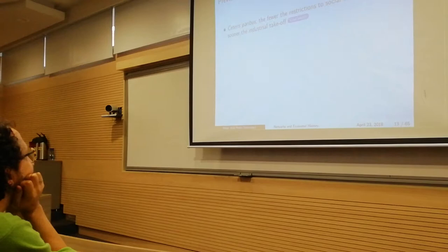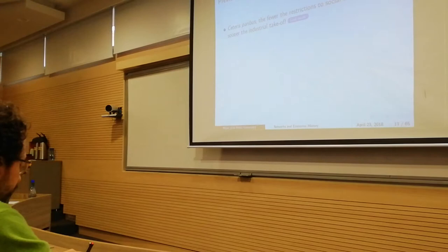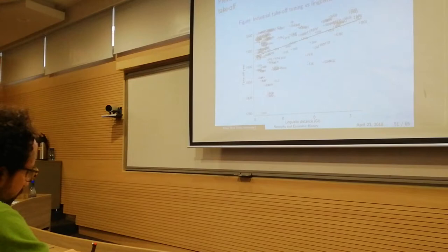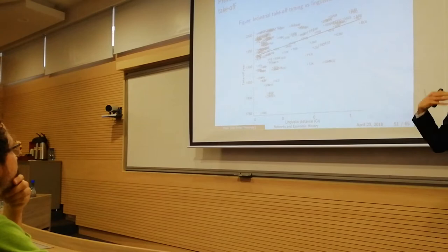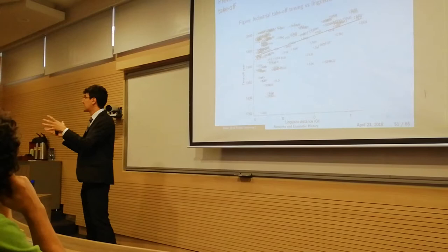Here there's some evidence on this regard. So these are countries and this is the linguistic distance of those countries before the industrialization. So basically it is how different were the languages spoken by individuals in one country before they industrialized. They could be super similar if everyone spoke, let's say, Spanish, or they could be very different if they spoke Spanish and Chinese.